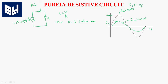These two waveforms are in phase with each other. V = Vm sin ωt, and I = V/R = (Vm sin ωt)/R = Im sin ωt. So if you have given a voltage source as a sine wave, as voltage is directly proportional to current, we will get a current wave that is also a sine wave.